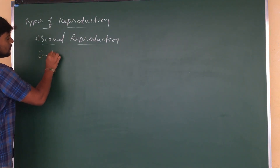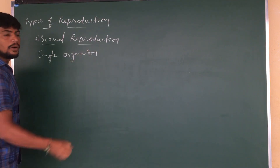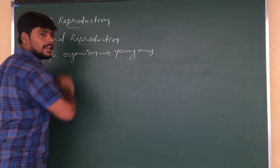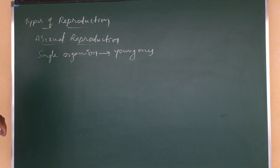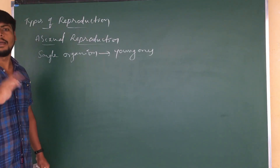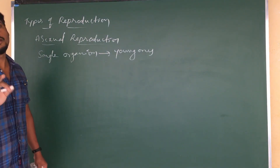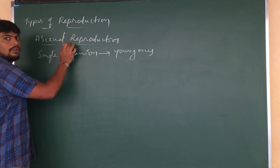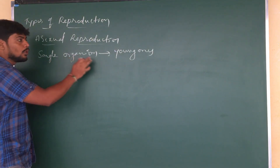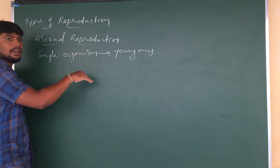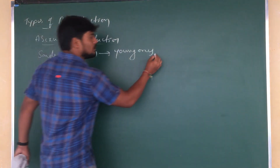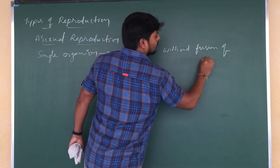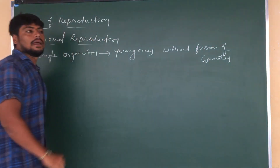Single organism produces their young ones, and another important event which is not occurring in this process is there is no production of gametes. If there is no production of gametes, there is no fusion of gametes, no fertilization, and no zygote formation takes place. So during the process of asexual mode of reproduction, a single organism is able to produce young ones without fusion of gametes.